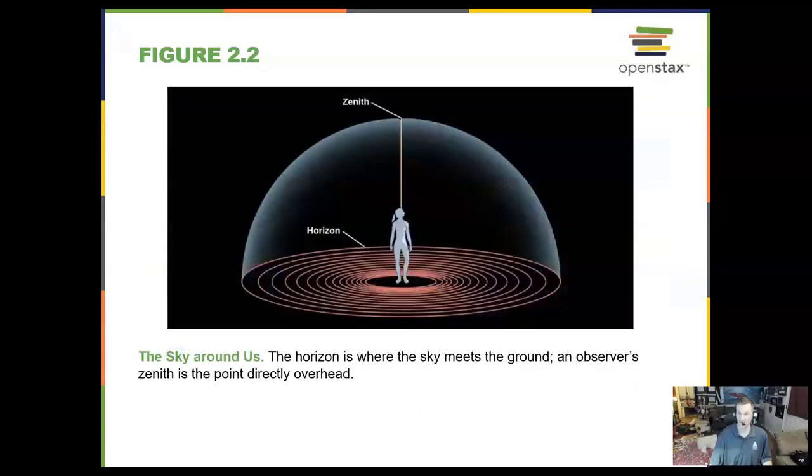The sky around us, you can think of the night sky as a great big globe, and we call this imaginary globe the celestial sphere, and we have some points on the celestial sphere that we like to describe. The zenith is the point directly above your head. No matter where you are, the zenith is that point directly above your head. If you go 90 degrees out flat, you can make your horizon.